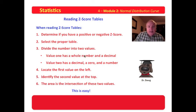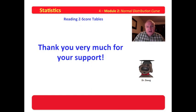Value 1 has a whole number and a decimal. Value 2 has a decimal, a zero, and a number. Locate the first value on the left, which is over here. Identify the next value at the top. The area is the intersection of these two values. So that really ought not to be too bad.